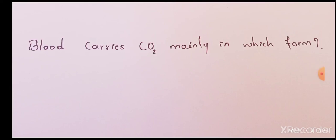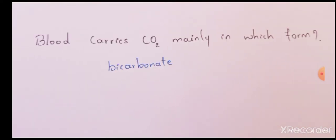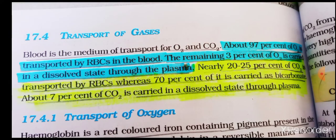Blood carries carbon dioxide mainly in the form which forms bicarbonate. Nearly 20-25% of carbon dioxide is carried or transported by RBCs, whereas 70% of carbon dioxide is carried as bicarbonate. About 7% of carbon dioxide is carried in the dissolved state in plasma.